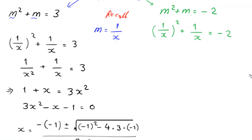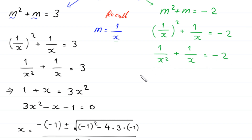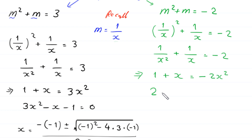For the equation 2x² + x + 1 = 0, we apply the quadratic formula with a = 2, b = 1, c = 1: x = (-1 ± √(1² - 4·2·1)) / (2·2) = (-1 ± √(1 - 8)) / 4 = (-1 ± √(-7)) / 4.